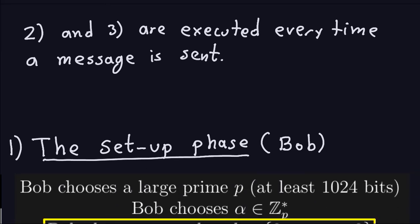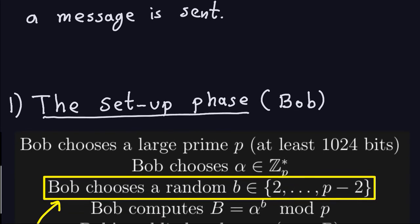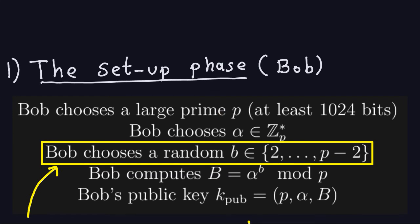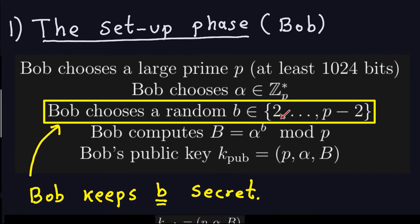In the setup phase, Bob chooses a large prime P of at least 1024 bits. Bob also chooses alpha in Z_P star, which must be a generator of Z_P star. Then Bob chooses a random number B between 2 and P minus 2. This is exactly the same as in the Diffie-Hellman key exchange. This B is the private key for Bob — he keeps it secret.